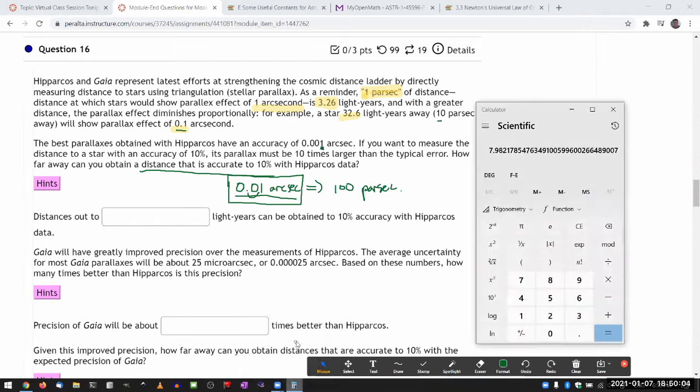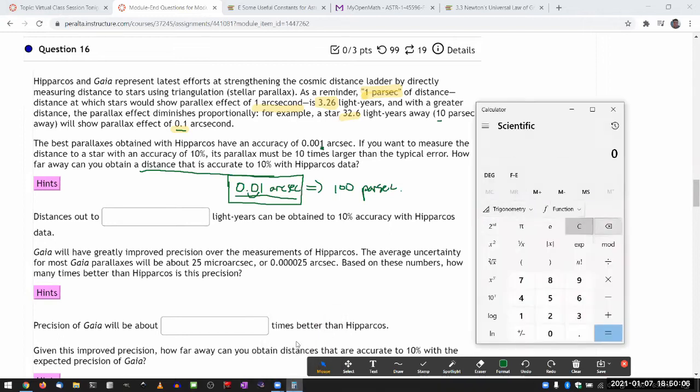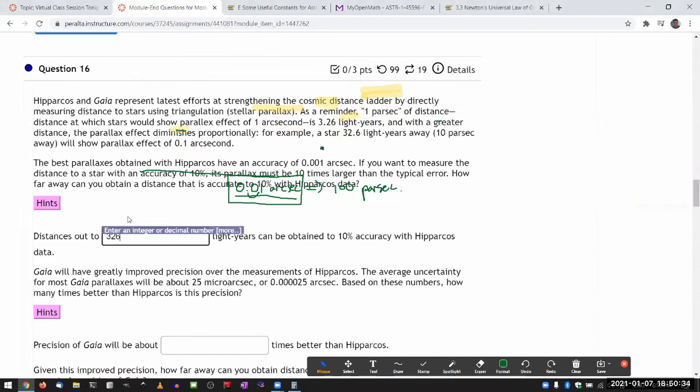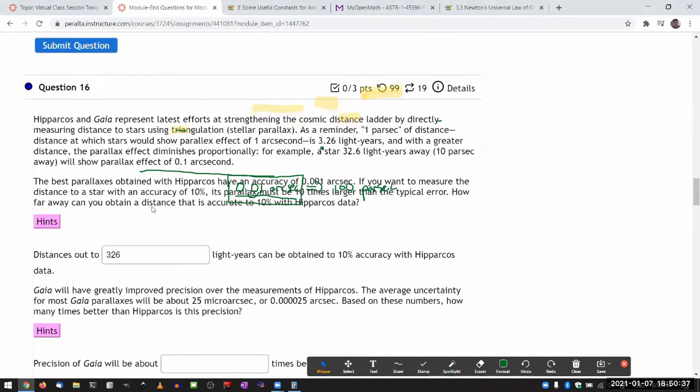Or if I want it to be more mathematical, I could do this on a calculator. The calculation I would do is, one parsec away is 3.26 light years away. And to get the distance from the size of parallax effect, I divide it by the size of the parallax effect in arc seconds, 0.01. That gives me 326 light years, which is 100 parsecs. So this distance is out to 326 light years can be obtained with a 10% precision.